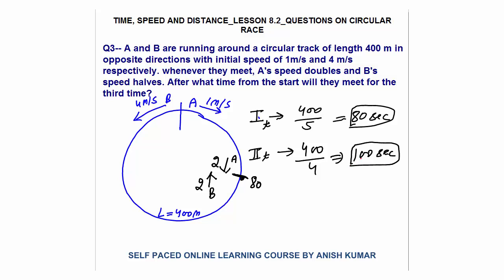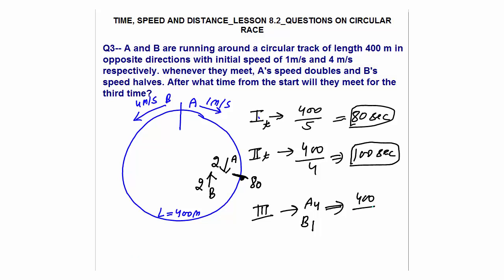After the second meeting, A's speed doubles again from 2 to 4, and B's speed halves from 2 to 1. The relative speed is again 5, so they have to reduce 400 meters at speed 5 — that is again 80 seconds for the third meeting. So the total time from the start for the third meeting is 80 + 100 + 80 = 260 seconds. That is the answer.